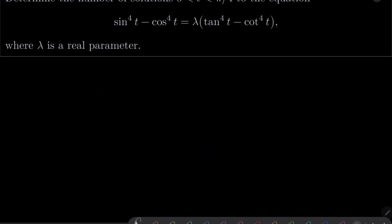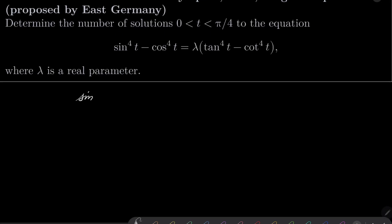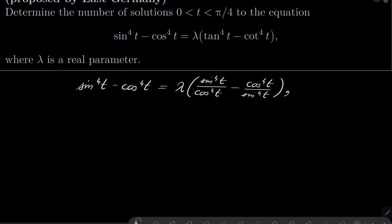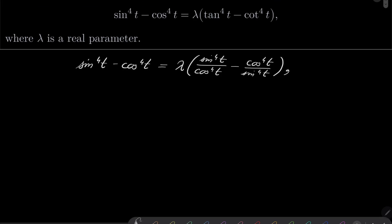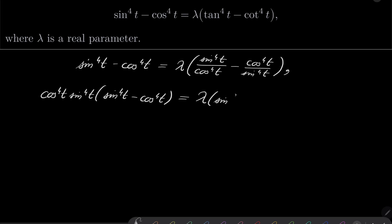Let's take our equation and transform it. First, write tan⁴(t) as sin⁴(t)/cos⁴(t) and cot⁴(t) as cos⁴(t)/sin⁴(t). Now multiply both sides by sin⁴(t)cos⁴(t). On the left we get sin⁴(t)cos⁴(t) times (sin⁴(t) − cos⁴(t)), and on the right λ times (sin⁸(t) − cos⁸(t)).